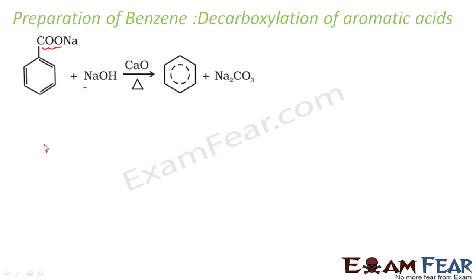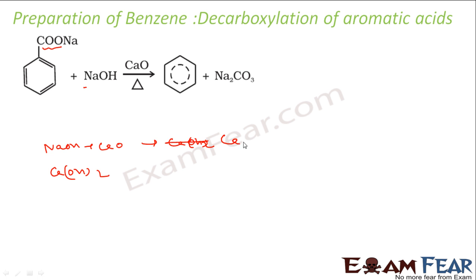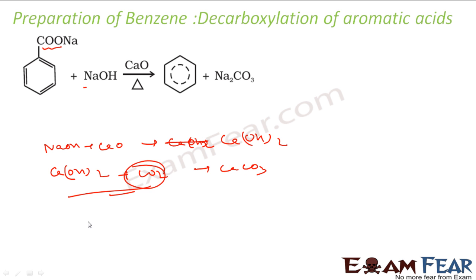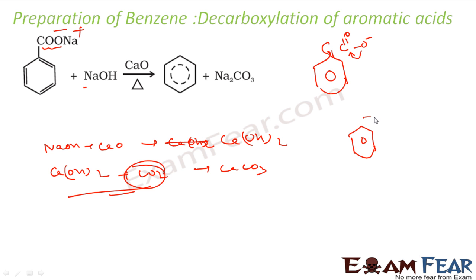I'll show you the reaction. So I have NaOH and CaO. This forms Ca(OH)₂. If you react Ca(OH)₂ with carbon dioxide, it will form CaCO₃ — this is how it absorbs carbon dioxide. What happens is the O⁻ goes in this direction, this bond breaks, it becomes a minus charge, and then you add H⁺, completing the reaction.